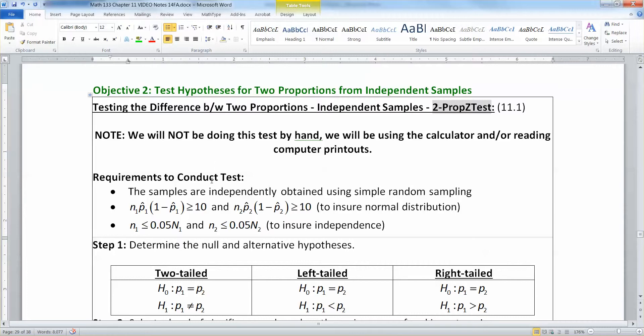And so you need to have both the first group and the second group satisfy both of those same conditions from chapter 10 in order to ensure normality with the case of n times p times 1 minus p greater than 10 and independence in the case of the sample size being less than 5% of the population size.